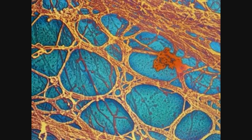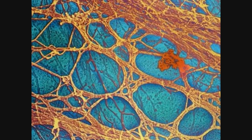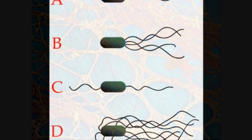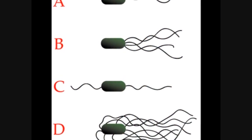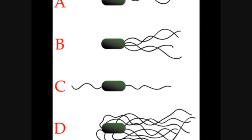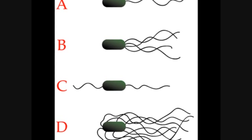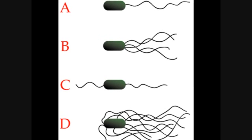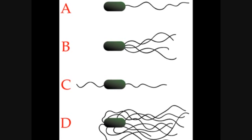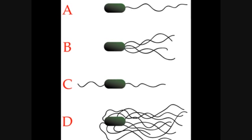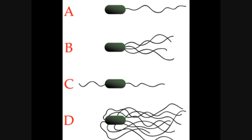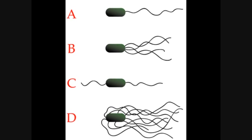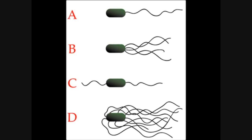The cytoskeleton helps support the cell's structure. This image shows cilia and flagella. Cilia are short hair-like extensions from the cell that aid in cell movement. The flagella, labeled A, is a long hair-like extension on the cell that helps the cell propel.